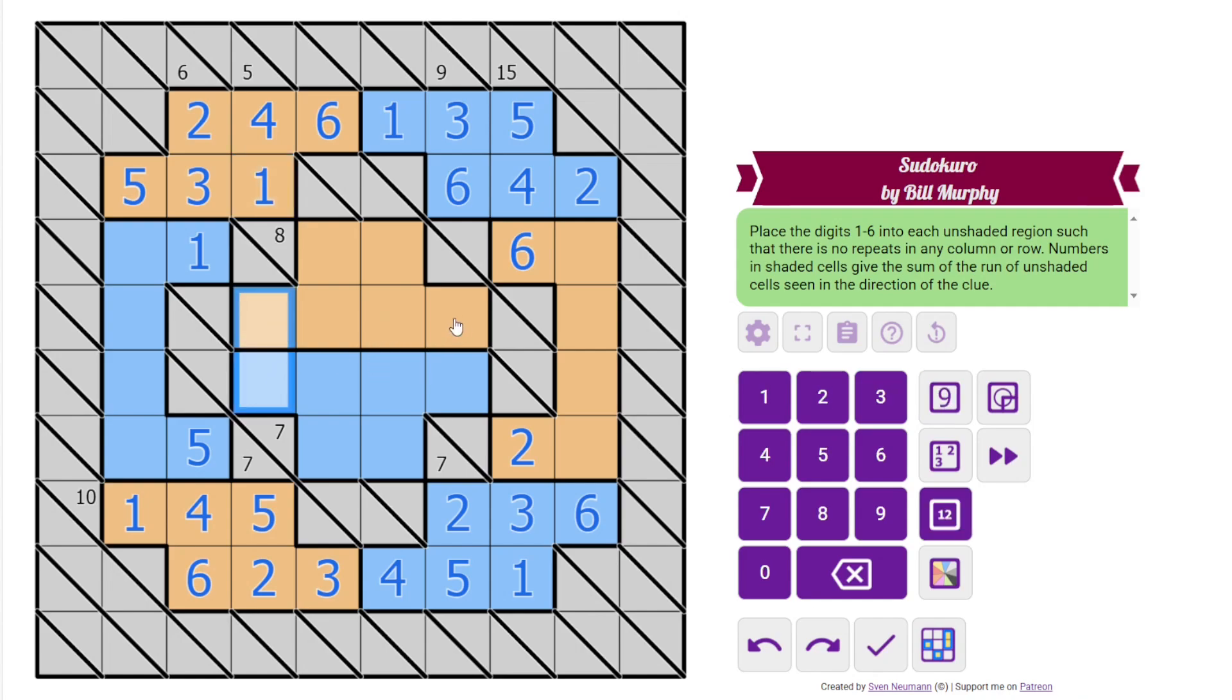Alright, this column still needs 3 and 6. This needs 1 and 4. Alright, we need to sum to 8 here. We can't use 2, 6. So this must be 3, 5. And since the 3 is here, it's going to place 6, 3, like that.